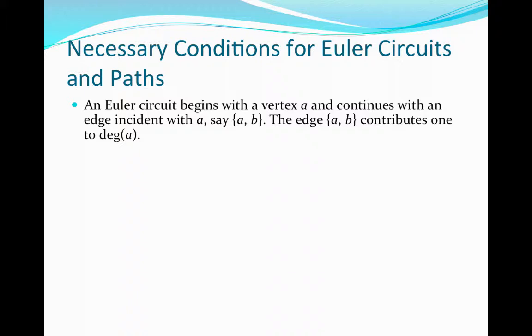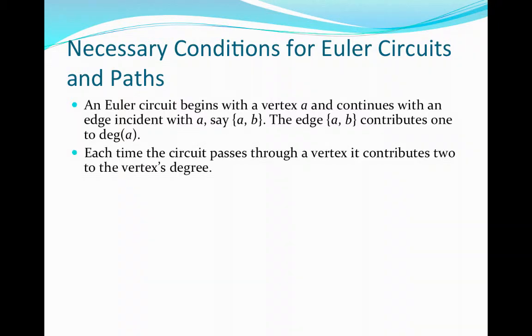We're going to continue to choose edges that are incident with the particular vertices. As we go through each vertex, we choose a new edge we haven't traversed before until we get back to vertex A. Each time the circuit passes through a particular vertex, it contributes 2 to that vertex's degree — 1 degree to the vertex it's leaving and 1 degree to the vertex it's ending at.